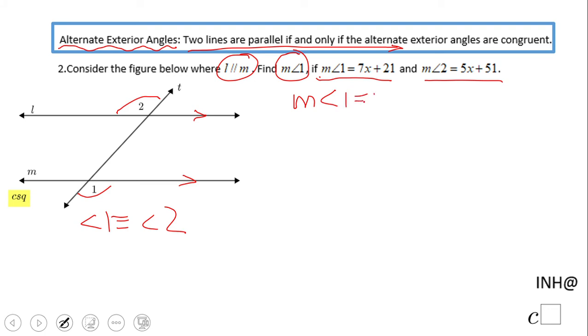And all this geometric statement becomes an algebraic problem: 7x plus 21 equals 5x plus 51.